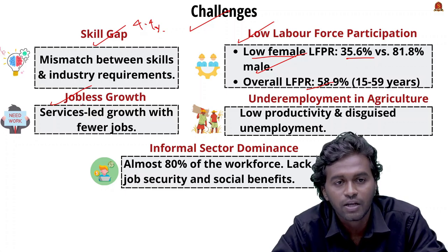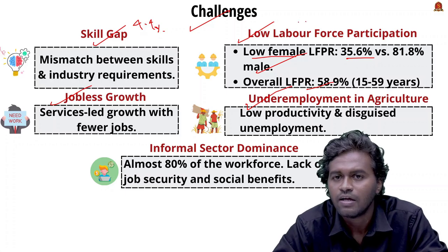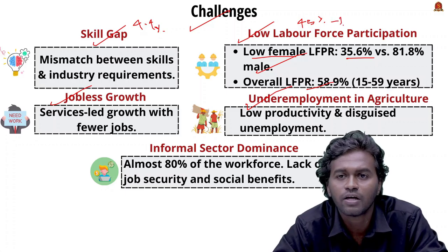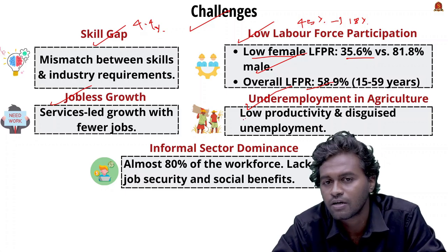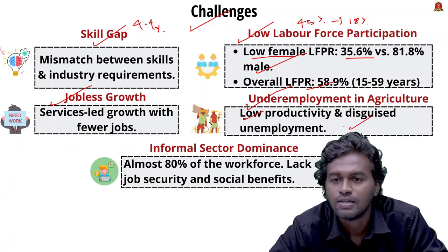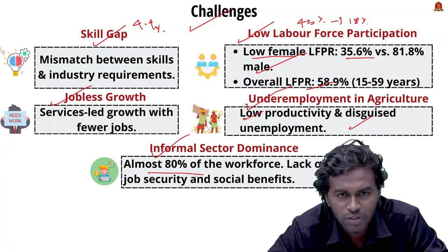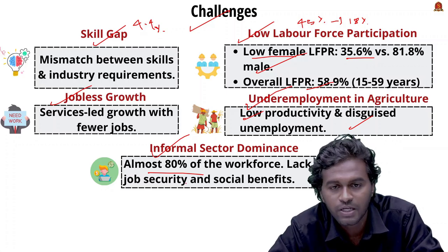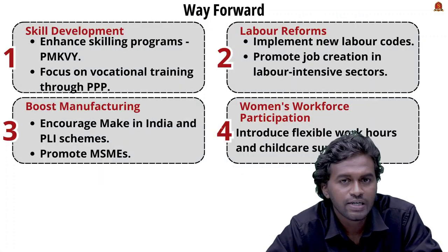This service-led growth resulted in underdevelopment of manufacturing and agriculture sectors. Nearly 45% of the workforce is employed in agriculture while its contribution to GDP is only 18%, indicating low productivity and disguised unemployment. Additionally, nearly 80% of the workforce is employed in the informal sector, lacking job security, social benefits, and suffering from low wages.